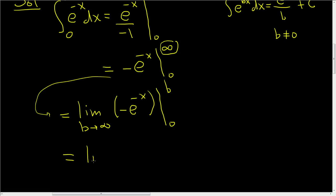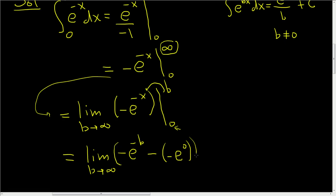This is equal to the limit as b approaches infinity. Now we take b and plug it in, so we get negative e to the negative b minus parentheses negative e to the 0. To recap: integrating is pretty easy. Once you get here, you replace the infinity with a variable — I use b — and then let b go to infinity. Then you plug in b first, then plug in 0.